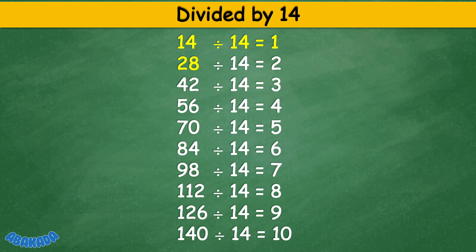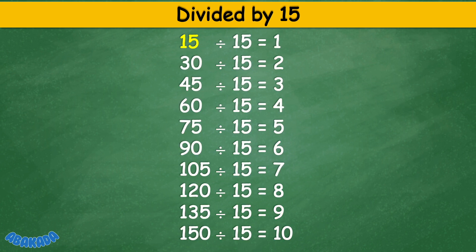Divided by 14. 14 divided by 14 equals 1. 28 divided by 14 equals 2. 42 divided by 14 equals 3. 56 divided by 14 equals 4. 70 divided by 14 equals 5. 84 divided by 14 equals 6. 98 divided by 14 equals 7. 112 divided by 14 equals 8. 126 divided by 14 equals 9. 140 divided by 14 equals 10.